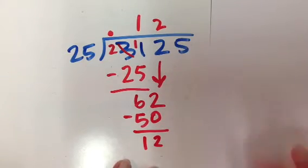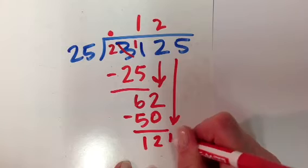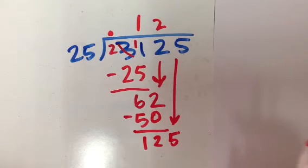25 can go into 62 twice, which is 50. And then I subtract. I have 12 left over. I'm going to drop the 5 down. 25 can go into 125. Oh, gosh. I think 5 times, right?